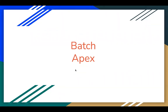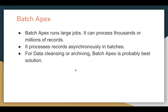Batch Apex is a type of asynchronous Apex which runs in the background. It runs large jobs and can process thousands or millions of records asynchronously in batches. The purpose of Batch Apex is data cleaning and data archiving. It divides a large number of records into multiple batches, which are run one by one with the same business logic applied to all of them.